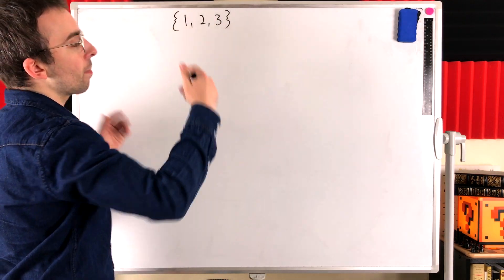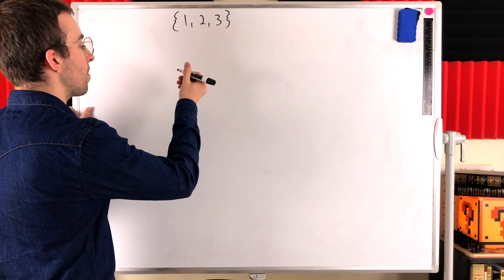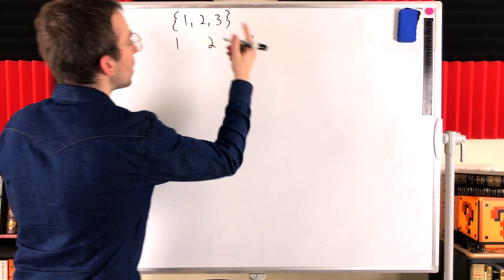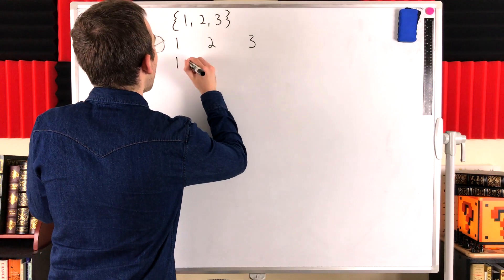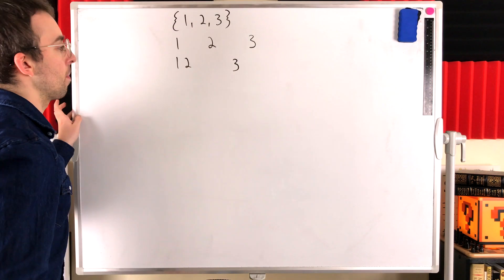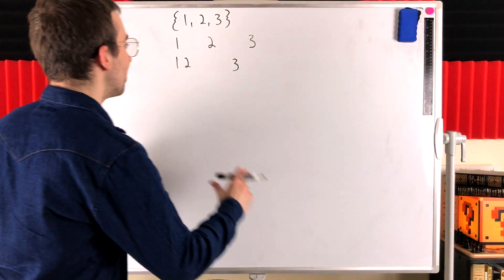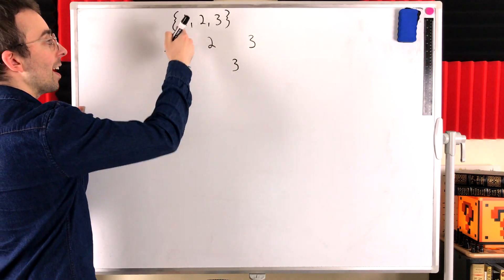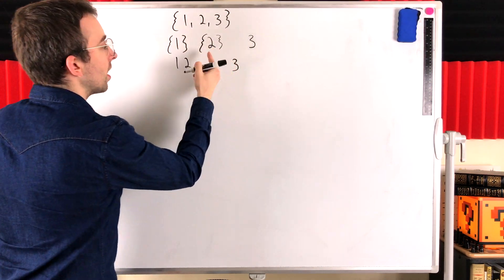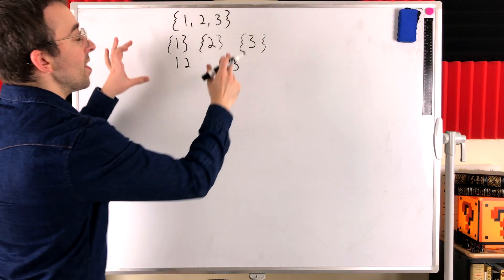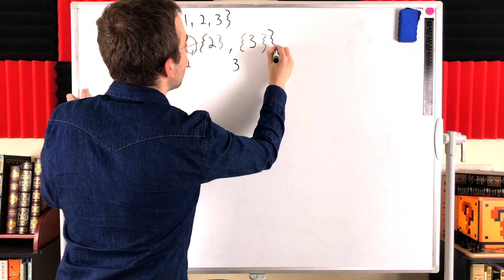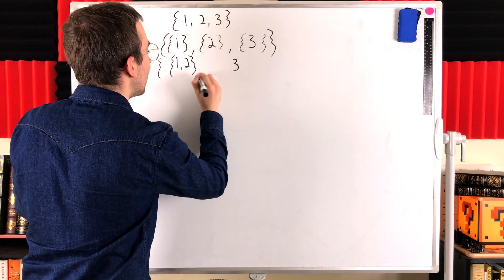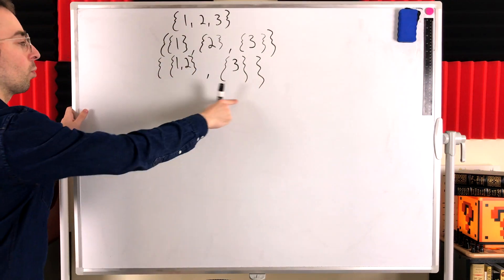What are some of the partitions of this set — in fact, all of them? We could put one in its own part, two in its own part, and three in its own part. Another thing we could do is put one and two together in a part, and put three in its own part. More formally, this partition would be the subset containing one, the subset containing two, the subset containing three, and the actual partition is the set containing these subsets. Similarly, this partition is the set containing the subset with one and two, and the subset containing three.